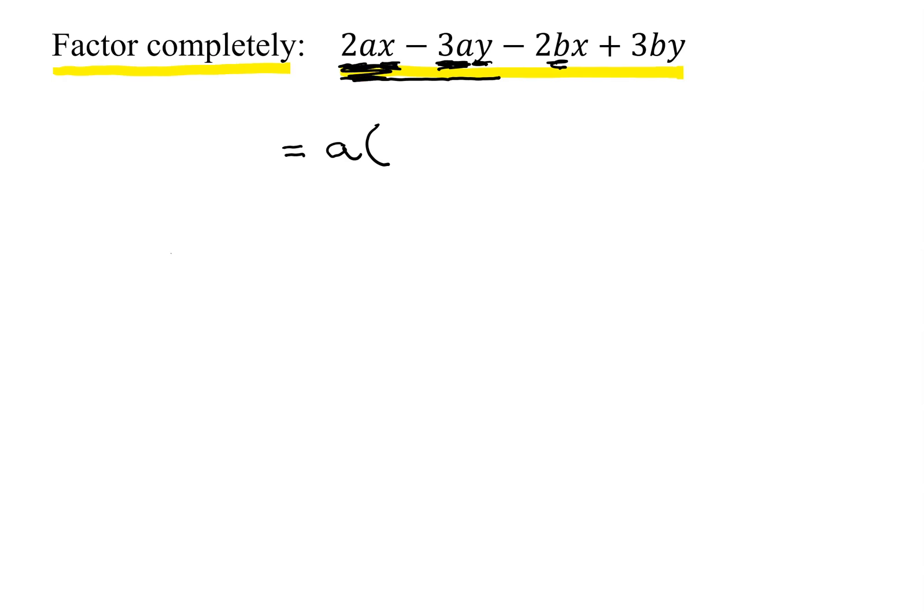So if I factor an A out of the first term, it's going to leave 2X minus, factor an A out of the second term, it's going to leave 3Y.